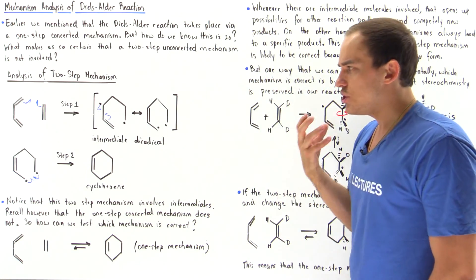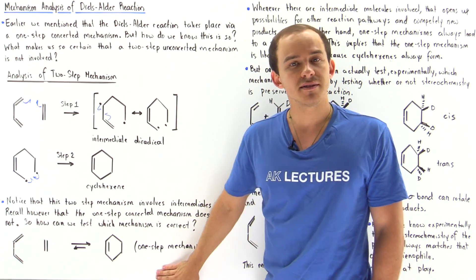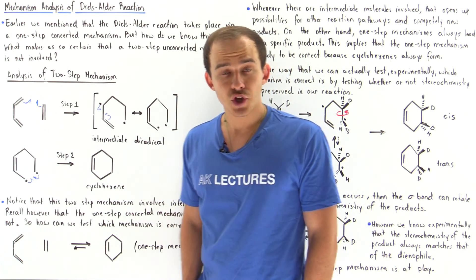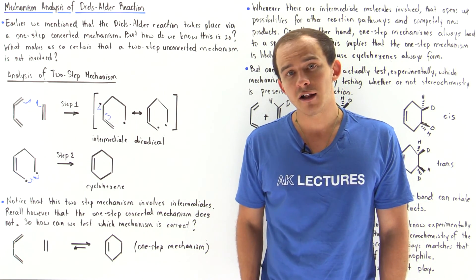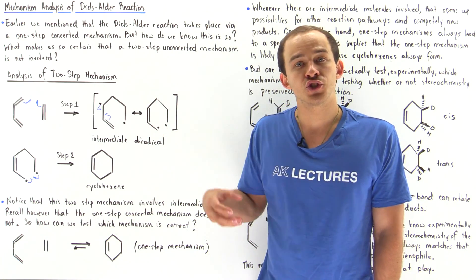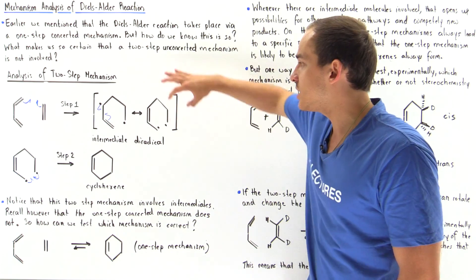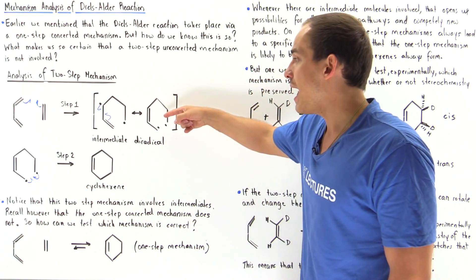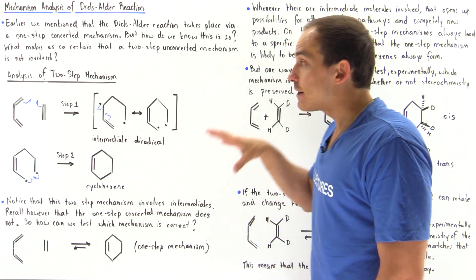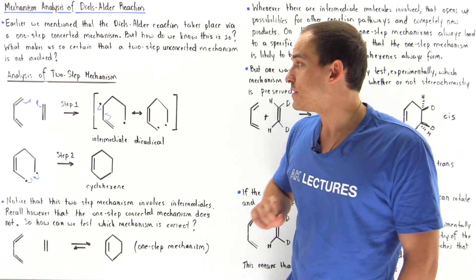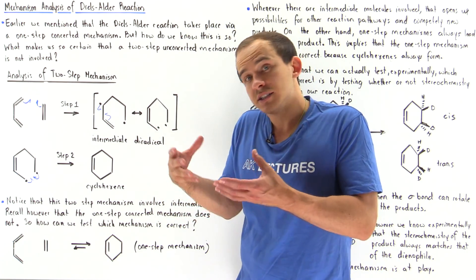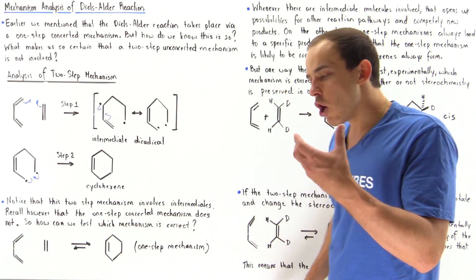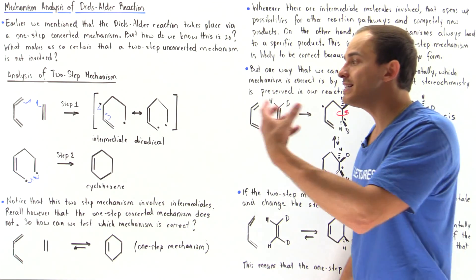The question is: how do we know that the two-step mechanism does not take place and that the one-step mechanism does? One thing we should recall about intermediates is that whenever a reaction involves intermediates, there is always a possibility for other reactions to compete. Because we form this intermediate, it could react in some other manner forming some other product. However, we know from experimental results that only cyclohexene is always formed in this reaction, so we might conclude the reason is a one-step mechanism. But that argument is not entirely correct because we can give a counter-argument.